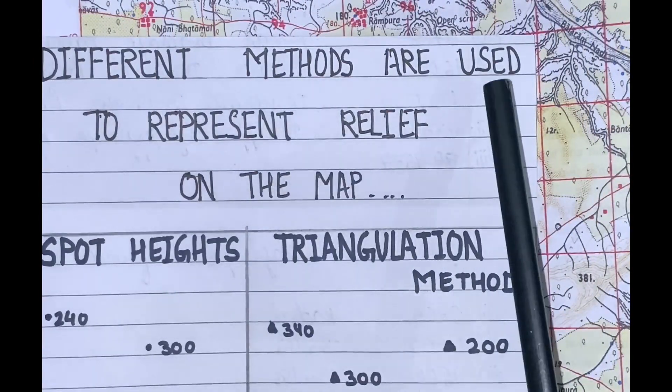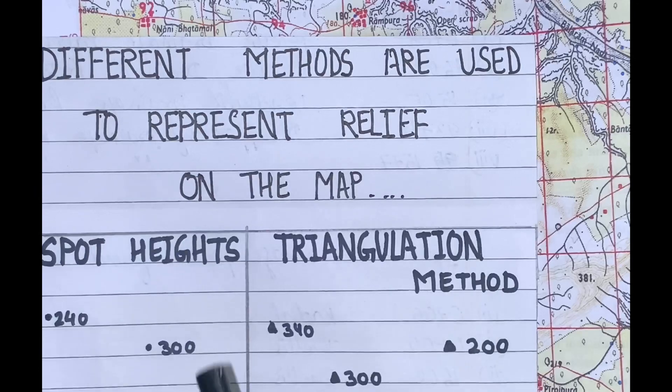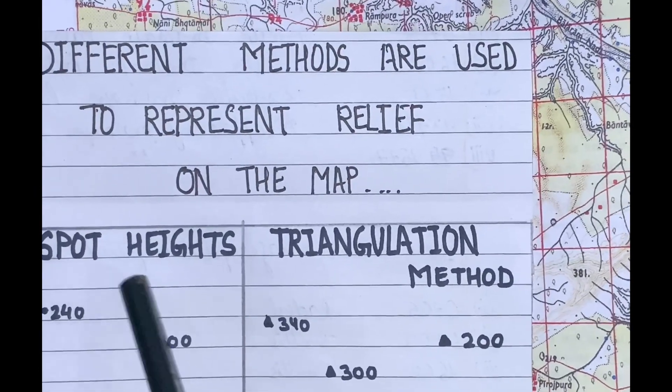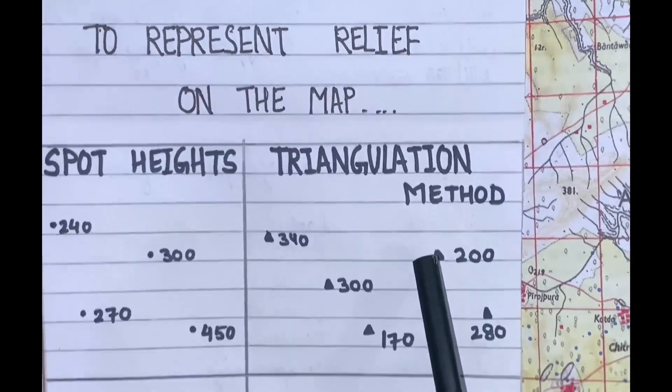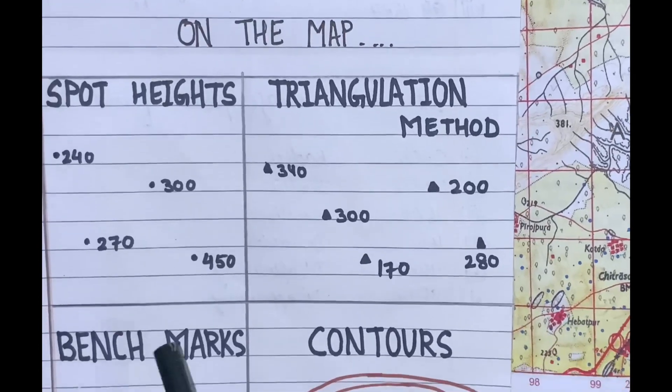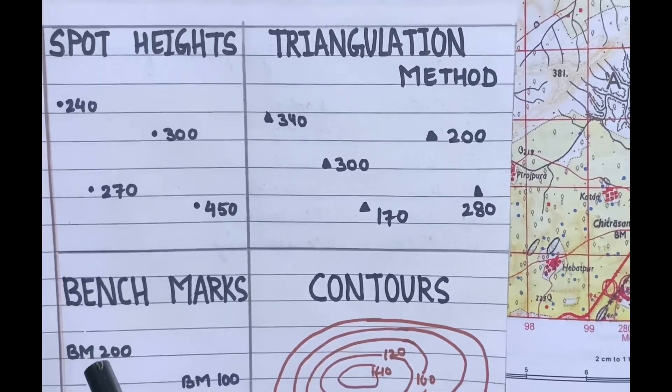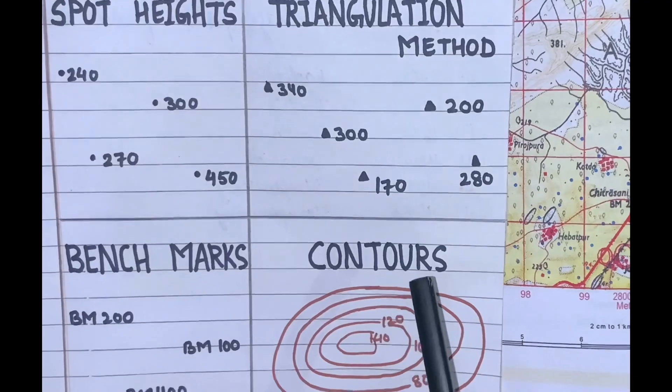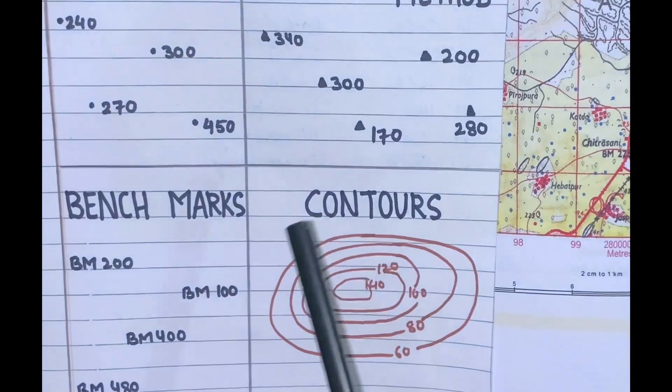Different methods are used to represent relief on the map such as spot heights, triangulated method, benchmark - it's written as BM in the map - and contours, which are drawn in brown color.